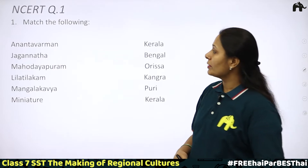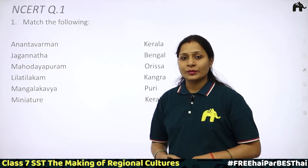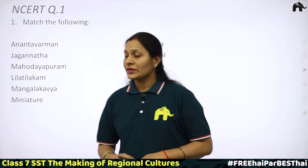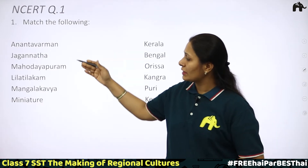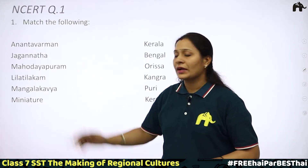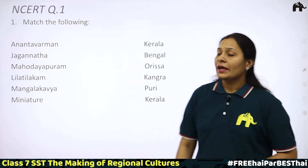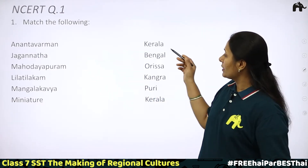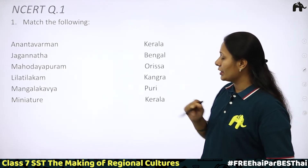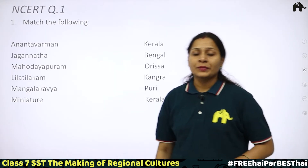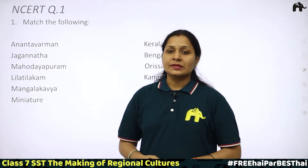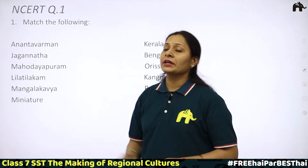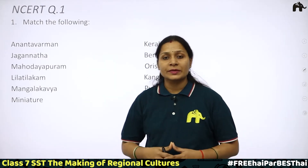Question number 1 is a matching exercise. On one side we have: Anandh Verman, Jagannath, Mahodayapuram, Leela Tilkam, Mangla, Kawi, and Miniature. On the other side: Kerala, Bengal, Orissa, and Kangra. Let's match them. First is Anandh Verman.